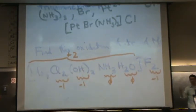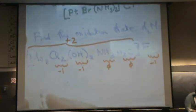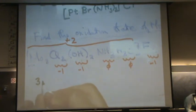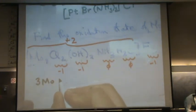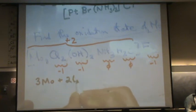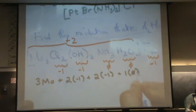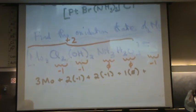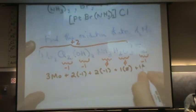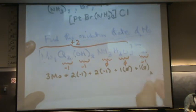What I usually do is find the charge in the brackets and then go from there when I set up my formula. Let's set up the formula: three Mo's, plus two chlorines at minus one, plus two hydroxides at minus one, plus one ammonia at zero, and one water at zero. And that equals the overall charge of plus two.